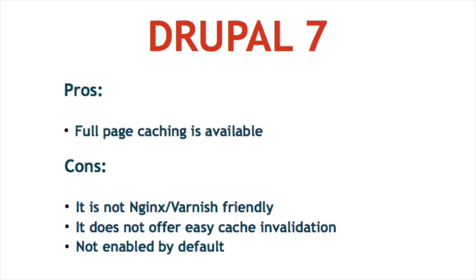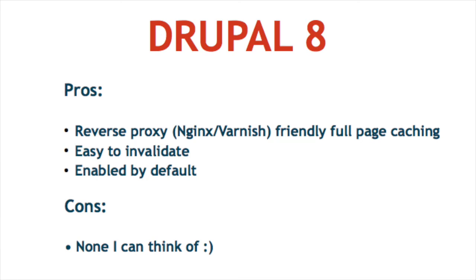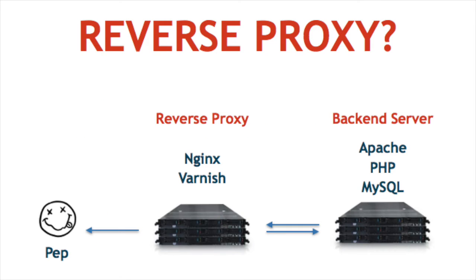Full page caching is also not enabled by default in Drupal 7. What about Drupal 8? It supports both Varnish and Nginx because it provides HTTP headers that tell your reverse proxy that a page can be cached, for example, for 2 or 3 hours. Nginx or Varnish can be configured to look at those HTTP headers and cache the page — and that's without any plugin. Cache invalidation is easy via expiration dates in the headers, and it's enabled by default.